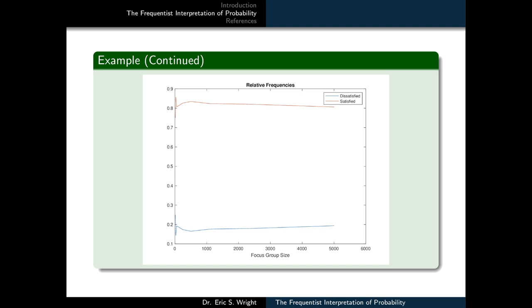And similarly, the orange trace represents the relative frequency of the satisfied customers, and it does tend to level off around 0.82, 0.81. And so these limiting values ultimately represent what we would consider to be an approximation to the frequentist probabilities.